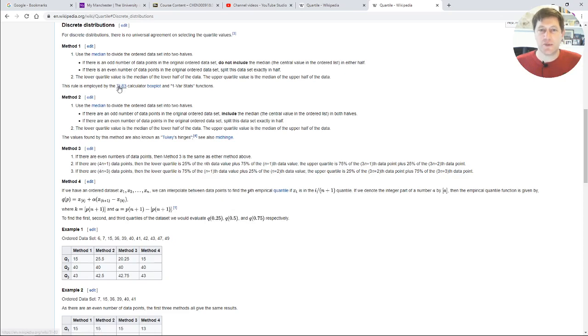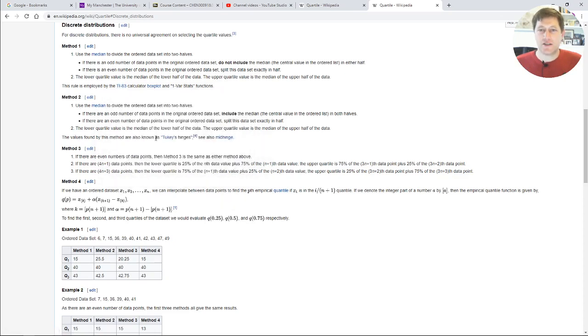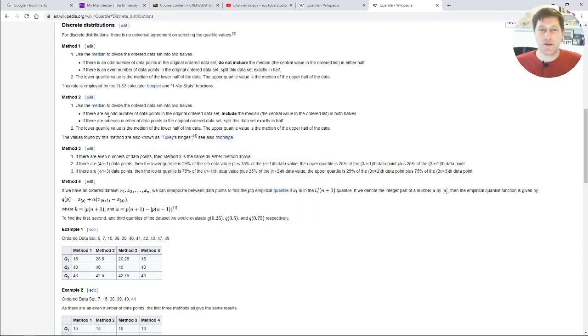So each of these methods is based on something that a Wikipedia author has found. This is how the TI-83 calculator does it. This is another method promoted by somebody. They're not right, they're not wrong, they're just different ways of doing it. There's some ambiguity when you're trying to find where the 25% quartiles are. We're going to use method one. Very simple. It means divide the data into two halves around the median, and then find the median of each of those halves. So we'll see how we do that.